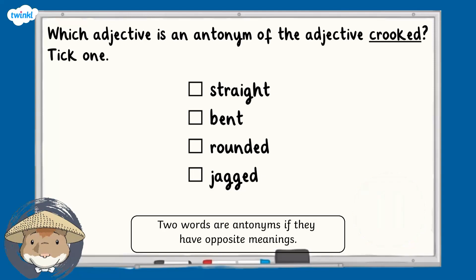So which word do you think is the opposite of crooked? That's right, the answer is straight. All the words are adjectives but straight has the direct opposite meaning to crooked. Therefore, straight is the antonym of crooked.